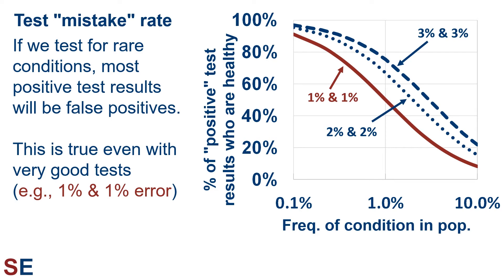This figure shows how the overall false positive rate corresponds to the condition frequency for three example tests. The solid red line shows the values for a test that has a false positive and negative rate of only 1%, a truly 99% accurate test. The dotted blue line shows a test with a false positive and negative rate of 2%, a 98% accurate test. The dashed blue line shows a test with a false positive and negative rate of 3%, a 97% accurate test. You can see that as the condition gets rare, even for very good tests, almost everybody who gets a positive test result is not in fact sick.